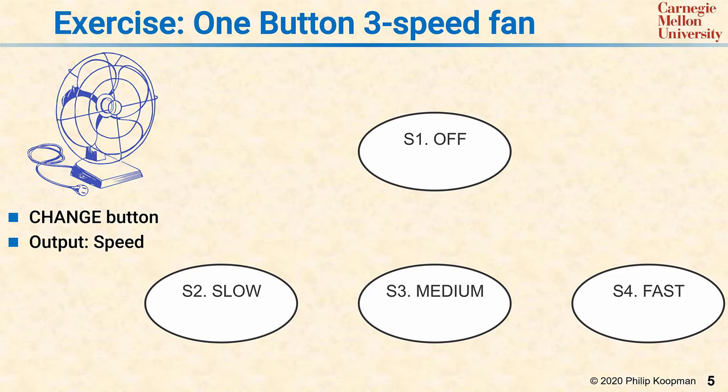Every finite state machine needs a system reset arc, so let's put that in now so we don't forget. We've decided that when the power turns on, the fan should power up in the off state. Next, we apply side effects.